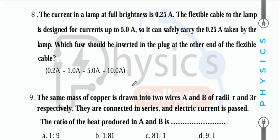A lamp at full brightness uses 0.25 A. To select the correct fuse for the plug: the fuse must be rated just above the lamp's current (0.25 A). From available options, choose 0.5 A fuse to protect the lamp without blowing under normal use.